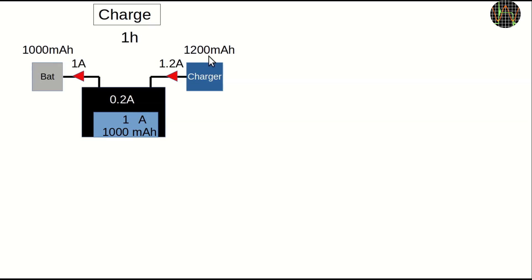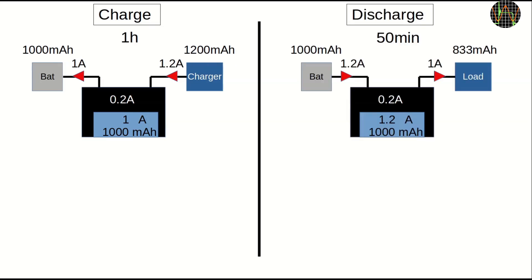If I now connect a load that draws 1A constant current, the module will draw 1.2A from the battery because it needs the extra 0.2A for itself. It shows this current correctly on the display. With a draw of 1.2A instead of 1A, a 1000mAh battery is empty after just 50 minutes. In that time, the load received just 833mAh.